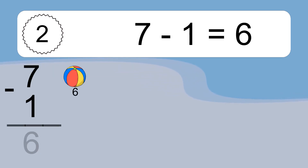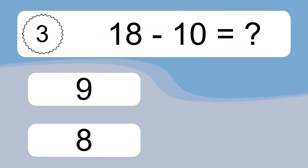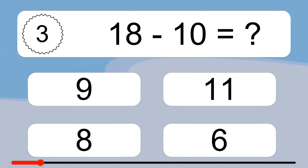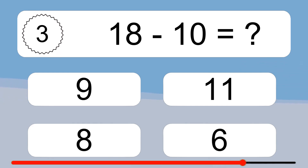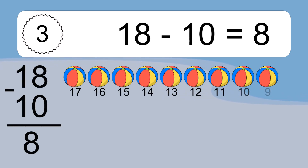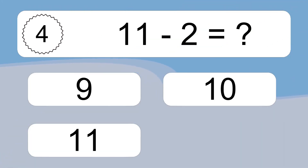Seven minus one equals what? Seven minus one equals six. Let's count it: six. Eighteen minus ten equals what? Eighteen minus ten equals eight. Let's count it: 17, 16, 15, 14, 13, 12, 11, 10, 9, 8. Eleven minus two equals what?